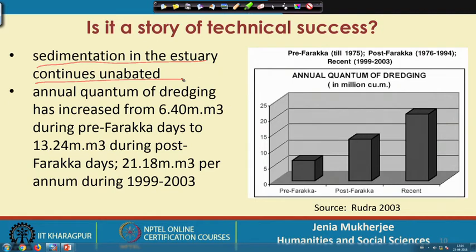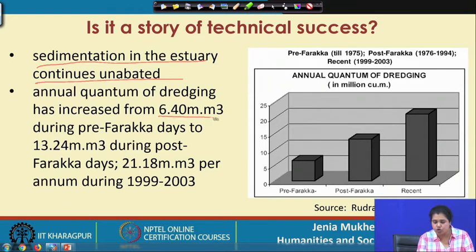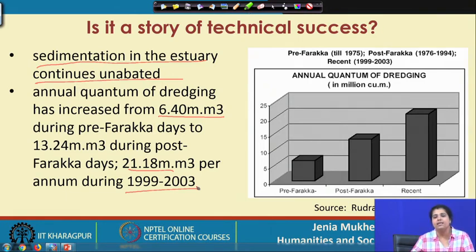The annual quantum of dredging has increased from 6.40 million tonnes during pre-Farakka days to 13.24 during Farakka days, and further increased to 21.18 per annum between 1999 and 2003. There are detailed and updated reports relating to the annual quantum of dredging, showing that the problems of siltation and sedimentation — which were supposed to be addressed through the construction of the barrage and its components like the feeder canal — had unfortunately not been met. Geographers and river experts are not very satisfied with the project and it is to a great extent considered a technical failure.